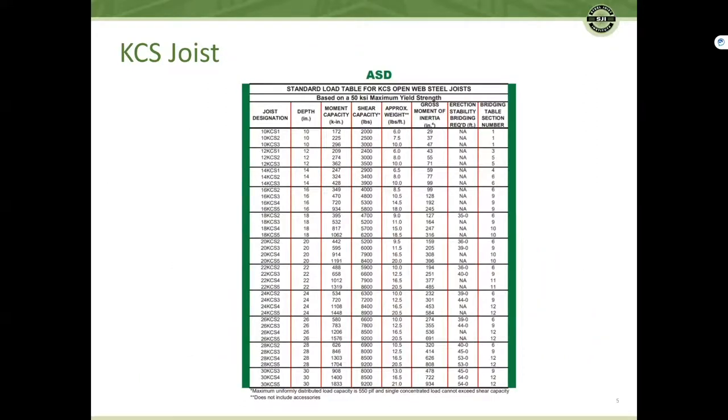KCS joists make it easy to specify a joist with increased capacity for non-uniform loading. A KCS joist is not specified by uniform load, but rather the maximum shear and the maximum moment capacity.